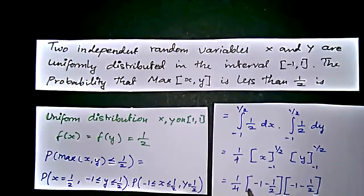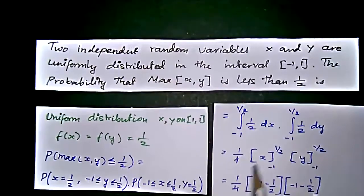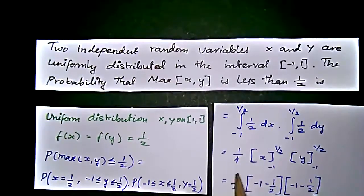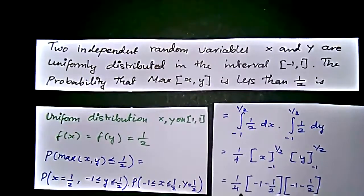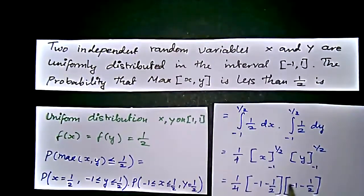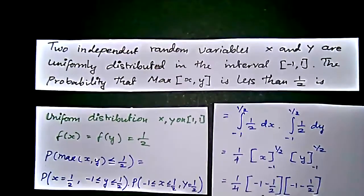1 by 4 which is taken from 1 by 2 times 1 by 2. We will get 1 by 4. We will take it apart from this integration. So we will get 1 by 4 times 1 by 2 minus minus 1 times 1 by 2 minus minus 1. That is lower limit minus upper limit.